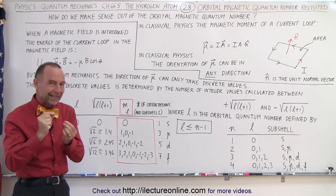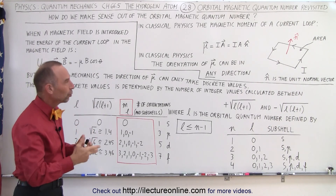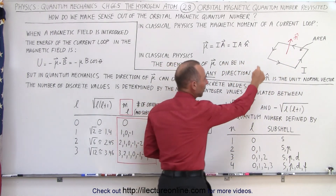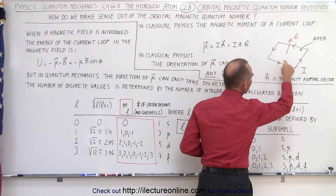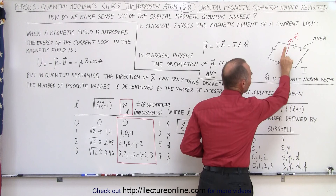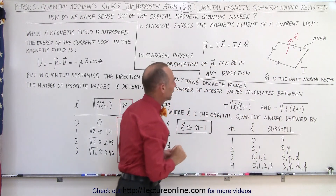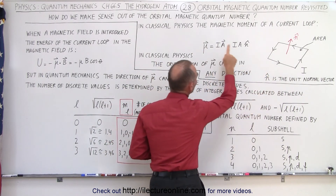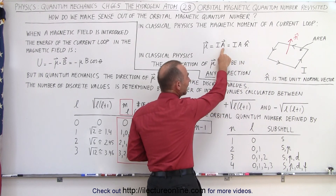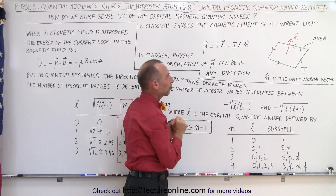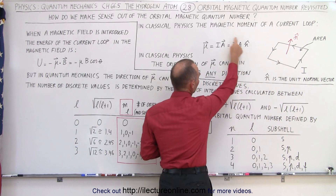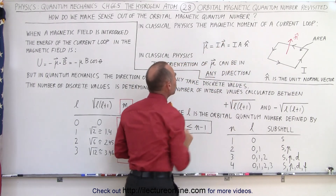First we're going to take a look at it from a classical perspective — classical physics. What we're going to do here is imagine we have a current loop. We make it rectangular; it's a little bit easier to work with. Here we have a current moving around in this rectangular loop. The loop creates an area and we have a vector pointing away from the area, perpendicular to the area, which we'll call the unit normal vector. The magnetic moment of that current loop is equal to the product of the current around the loop and the area in vector format — the magnitude of the area multiplied by the normal unit vector. This is known as the magnetic moment.